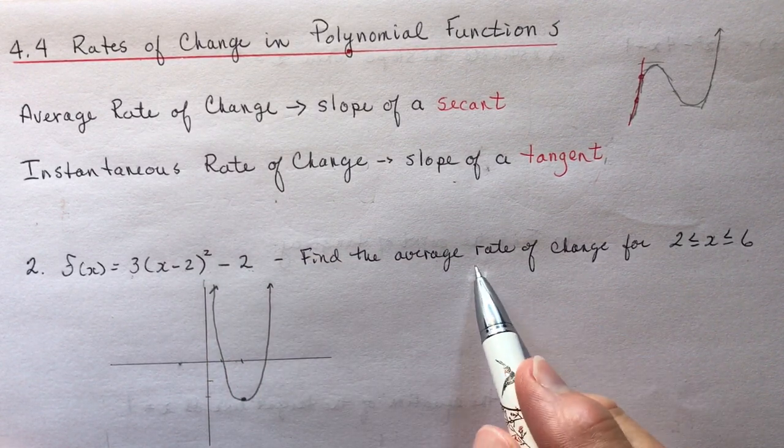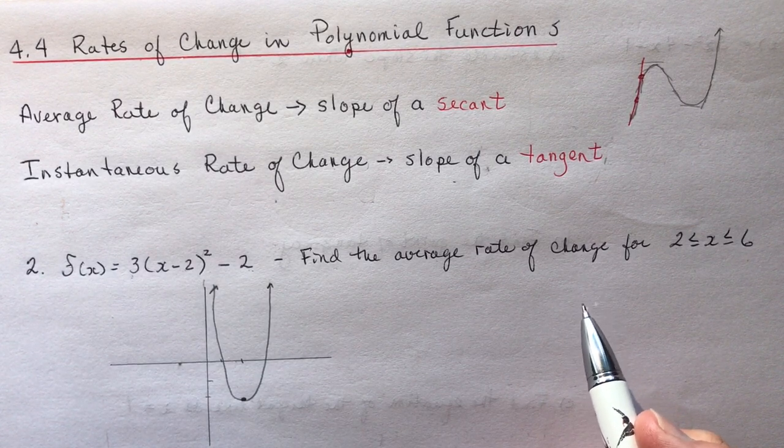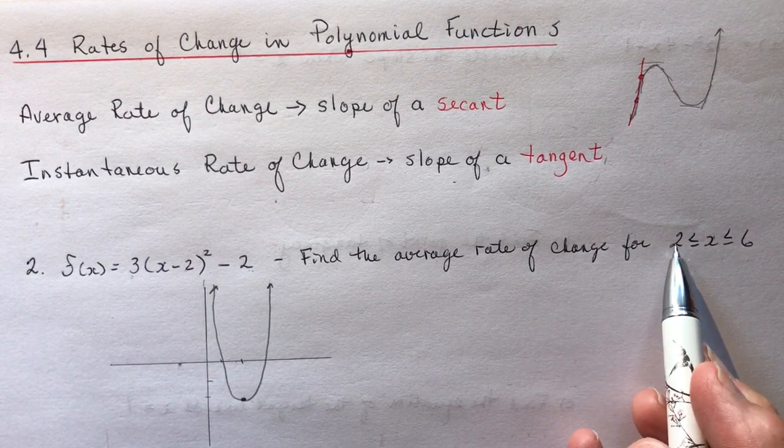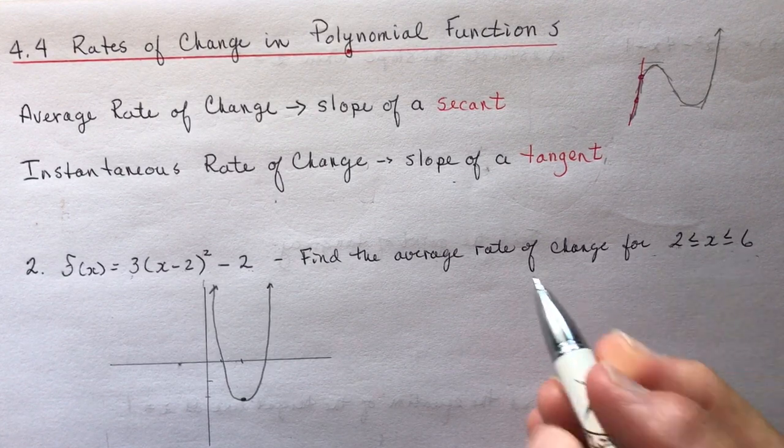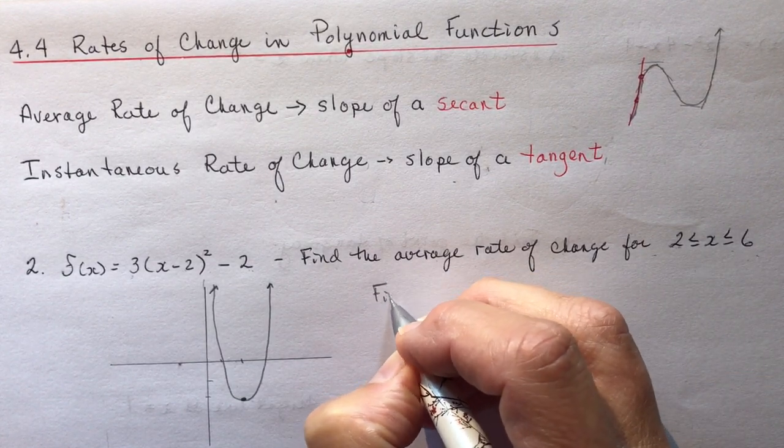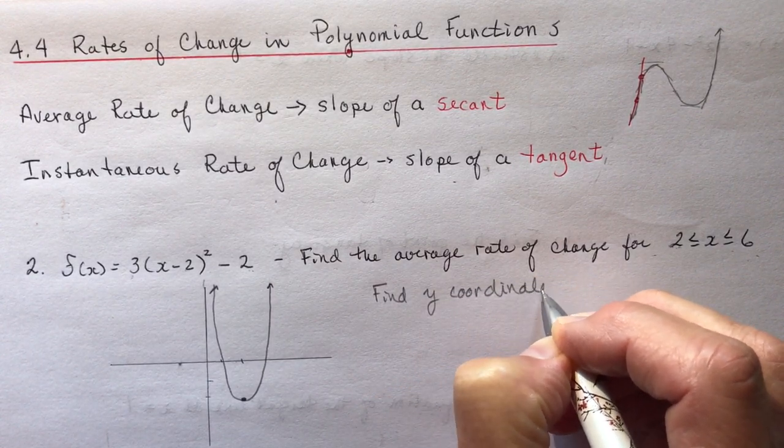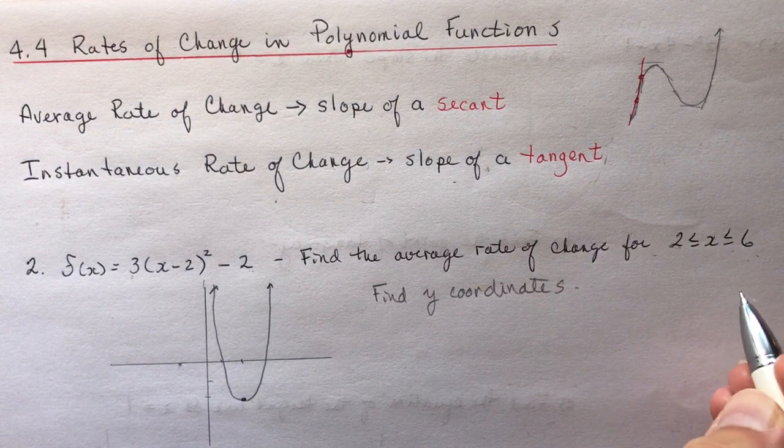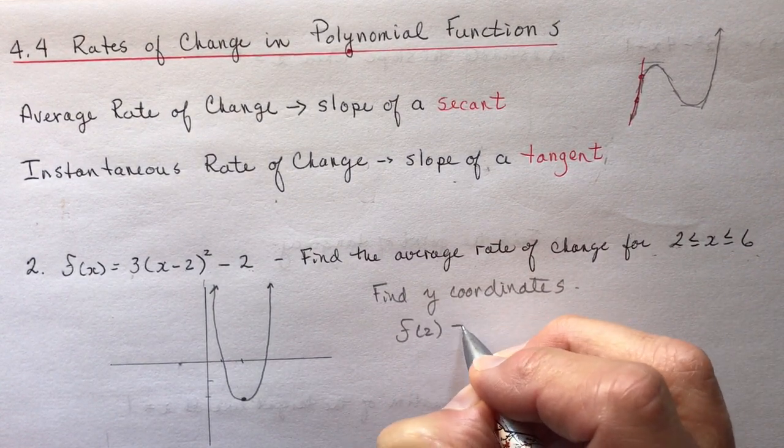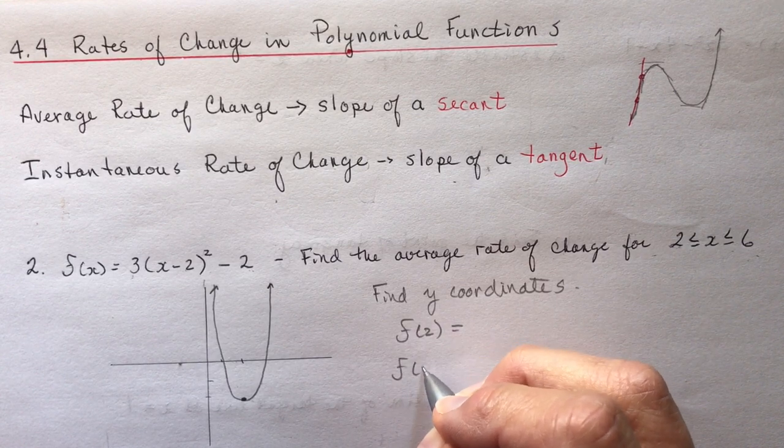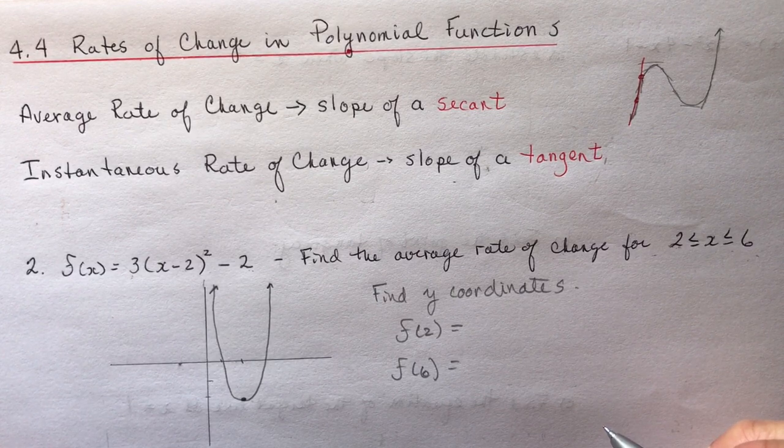So it says find the average rate of change. So remember, the average rate of change, all you have to do is pick two points. And they ask between 2 and 6. So I need to know what are the y-coordinates. So that's the first thing. Find the y-coordinates because I'm doing slope. That's it. You did it in grade 9. You can do it now. So what's f at 2? I need f at 2, and I'm going to need f at 6. So I can have two sets of coordinates, which I will use to find the slope.